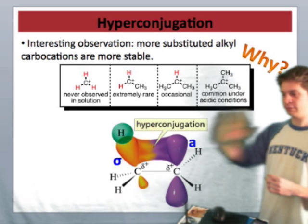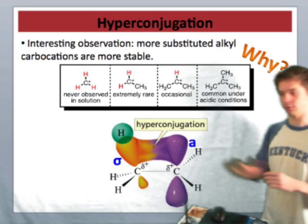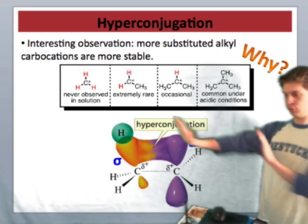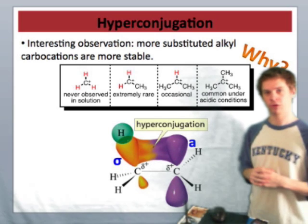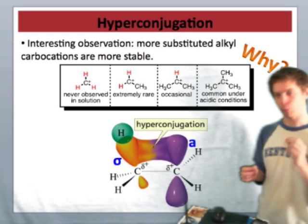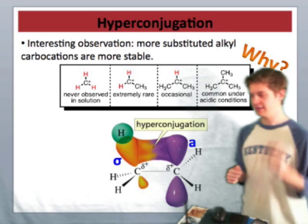then there's more stabilization of the p orbital. There are more carbon-hydrogen sigma orbitals pushing their electron density towards that cation, and as a result, they stabilize it. This is why more substituted cations tend to be more stable.